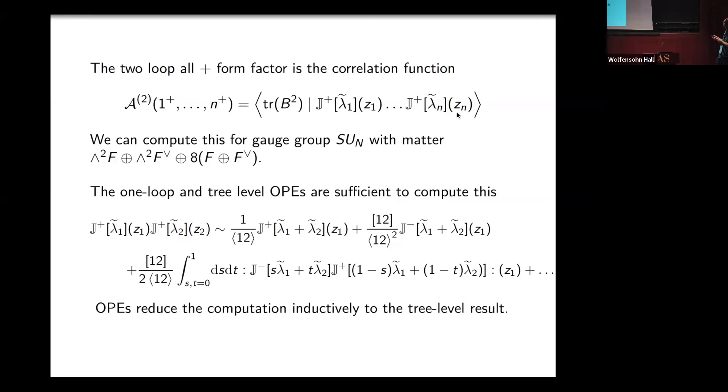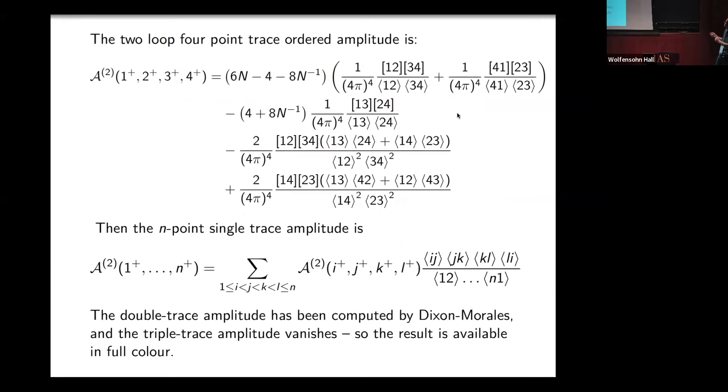I get terms where tree-level splitting function, one-loop splitting function, and this quite complicated non-splitting contribution. I fix one of, say, z1, and I look at what poles does this have when it hits the other z_i, and they're determined by these three things. What inductively reduces it to the case of the tree-level form factor by using the one-loop OPE twice. This is just pure algebra, rather tedious algebra. And here we find this answer.